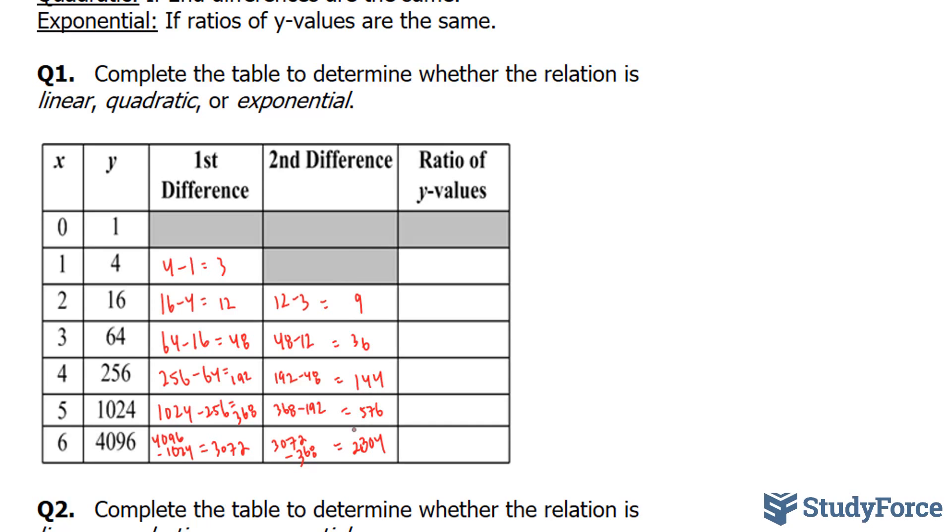Lastly, we'll try the ratios of y values column. And for this, I'll take 4 divided by 1, 16 divided by 4, 64 divided by 16, 256 divided by 64, 1024 divided by 256, and lastly 4096 divided by 1024. And for all of these, you should end up with the number 4. So therefore, this relationship is exponential.